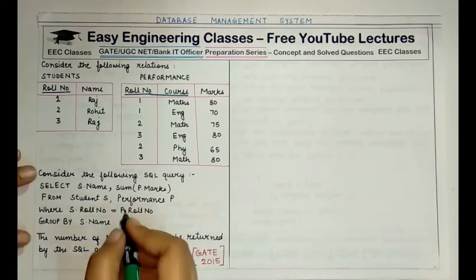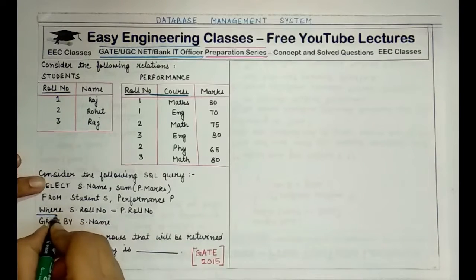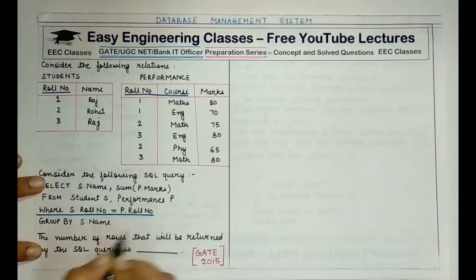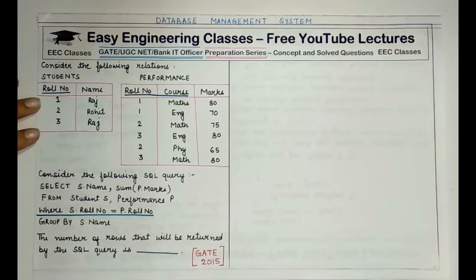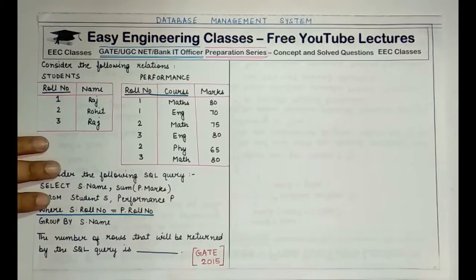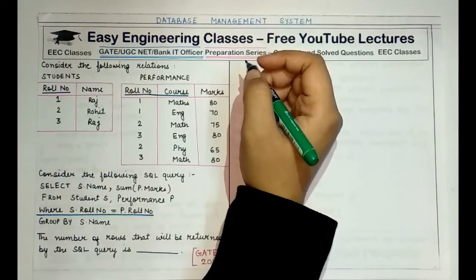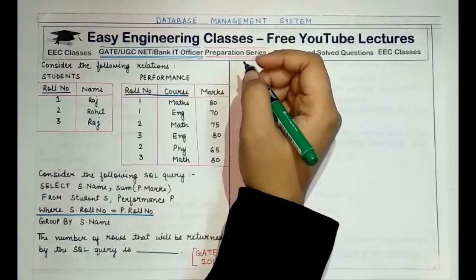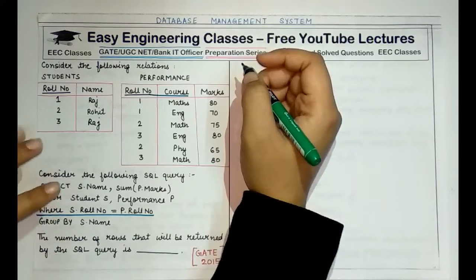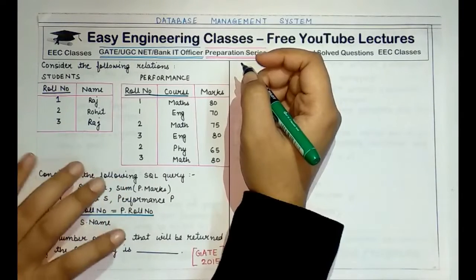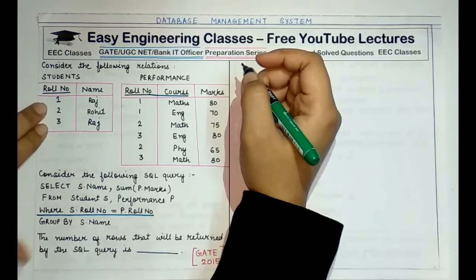When we write the condition WHERE s.role_number = p.role_number, in the first step of execution a natural join takes place based on the common column role number. Both tables are combined using this natural join, producing an intermediate result table.